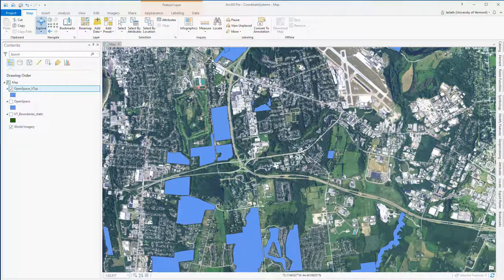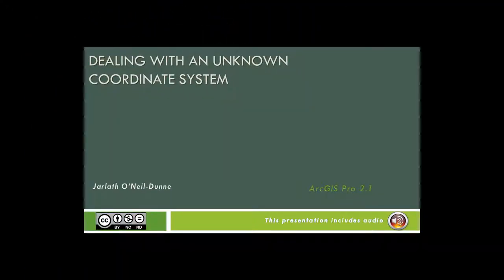In this video we showed you how to deal with an unknown coordinate system. First, we made sure we had an ArcGIS Pro project with a reference layer with a known coordinate system — a base map works just fine. Then we continually changed the coordinate system of the map data frame until our unknown layer appeared in the correct location. After it showed up correctly, we used the Define tool to define it to the coordinate system we determined it to be in. Finally, as an optional step, we projected it to a new coordinate system to allow more accurate measurements and integration with other data.